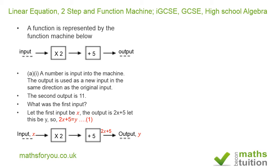Now next time we will input y in the same direction. So we now have that 2y plus 5 is equal to 11 because the output after the second input is 11. So that would be our second equation.